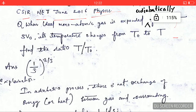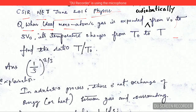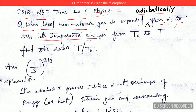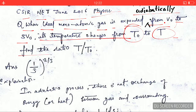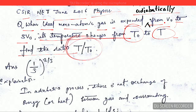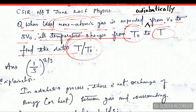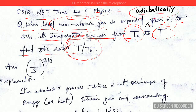The question is: when an ideal monatomic gas is expanded adiabatically from V₀ to 3V₀, its temperature changes from T₀ to T. Find the ratio T over T₀. We need to calculate this ratio for a monatomic gas expanded adiabatically.